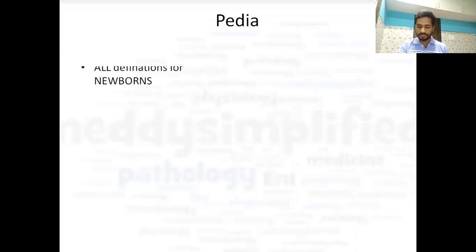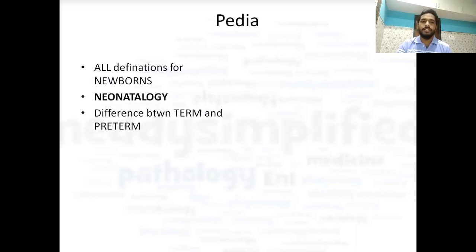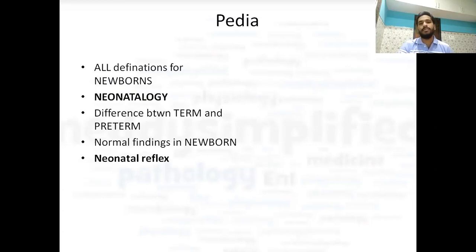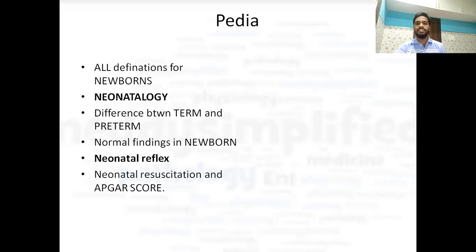Now talking about pediatrics. First of all, all the definitions: low birth weight baby, pre-term baby, post-term baby — all definitions related to newborns are important. Neonatology as a whole is a very important topic. Differences between term and pre-term babies are important. Normal findings in the newborn and neonatal reflexes — every time a question is asked from neonatal reflexes: when they first appear and when they disappear. You can find a table related to neonatal reflexes in your notes. Neonatal resuscitation and APGAR score are very important topics — you should cover them in pediatrics.